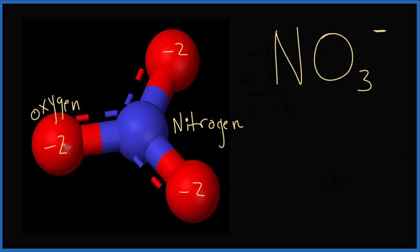If we add them all up, minus two plus minus two plus minus two, that gives us minus six.